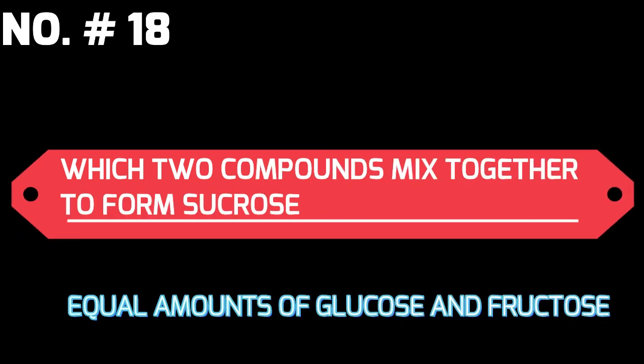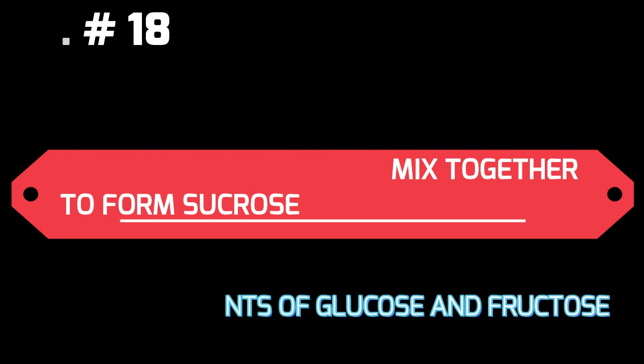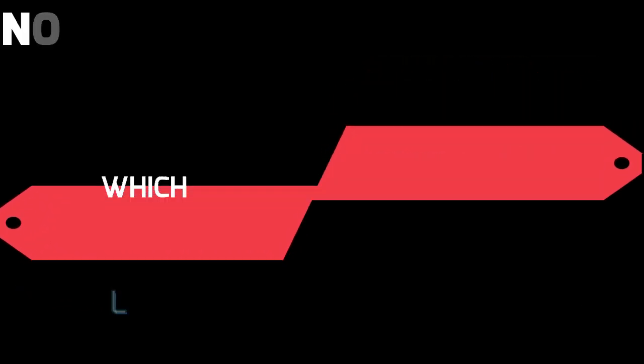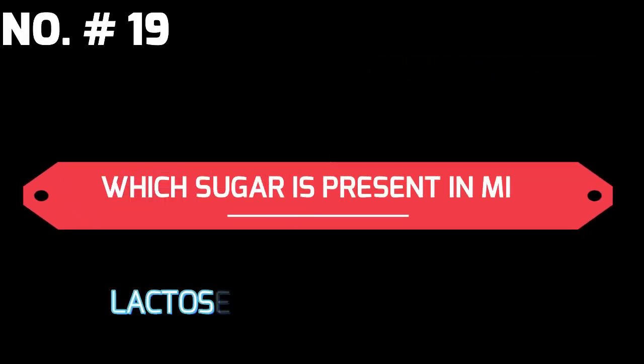Which two compounds mix together to form sucrose? Answer: equal amounts of glucose and fructose. Which sugar is present in milk? Answer: lactose.